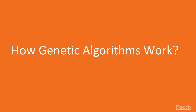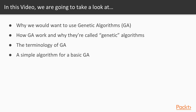Now let's look at how genetic algorithms work. We'll start by talking about why we'd want to use genetic algorithms. Then we'll look at how they work and why they're called genetic algorithms. Then we'll introduce the various terms used in GAs and show a simple genetic algorithm.